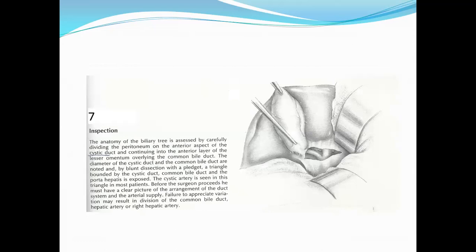The cystic artery is seen in this triangle in most patients. Before the surgeon proceeds, he must have a clear picture of the arrangement of the duct system and the arterial supply. Failure to appreciate variations may result in division of the common bile duct, hepatic artery, or right hepatic artery.